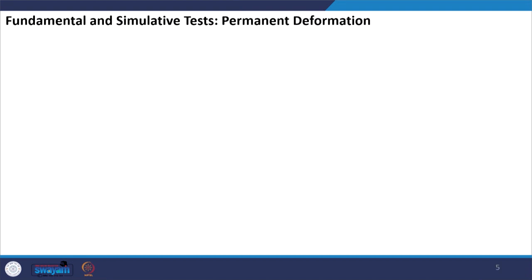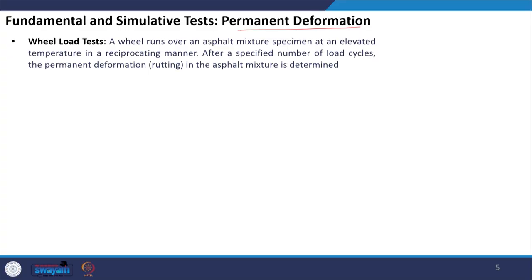Let us talk about fundamental and simulative tests. Fundamental tests are those which tell us something about the fundamental property of the material. Simulative tests, on the other hand, may not tell us exactly about material properties but will give us an indication of how the material will perform when subjected to similar levels of loading as seen in the field. The wheel load test, for example, is a simulative test.